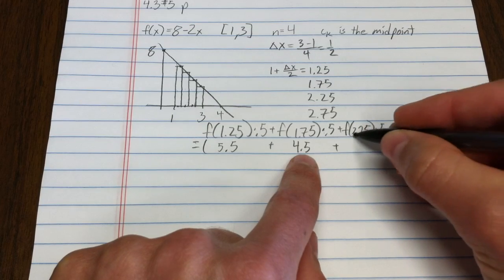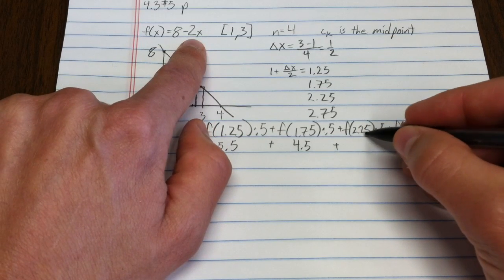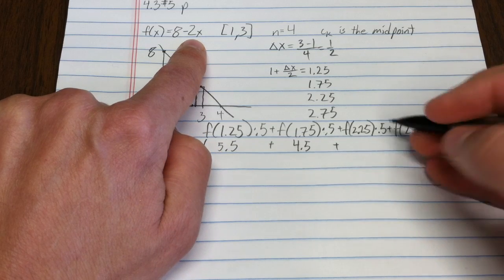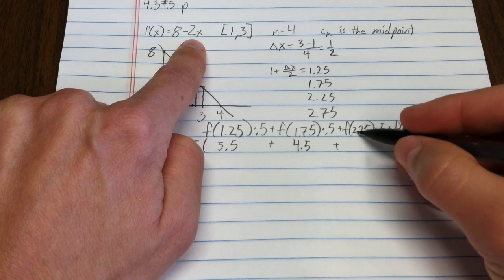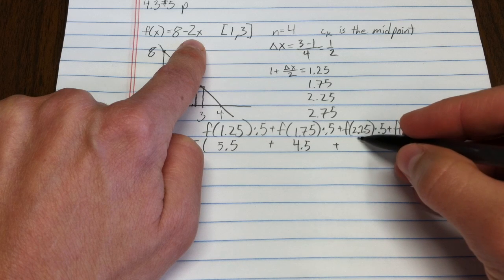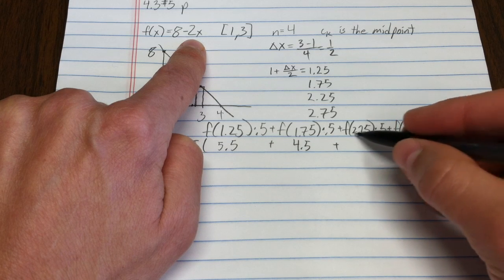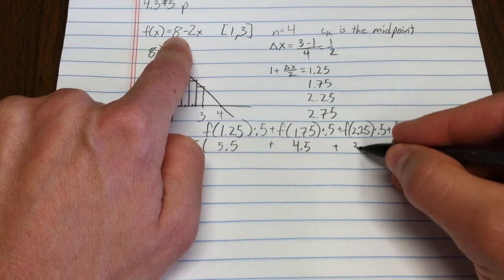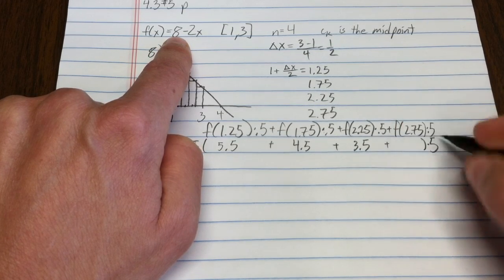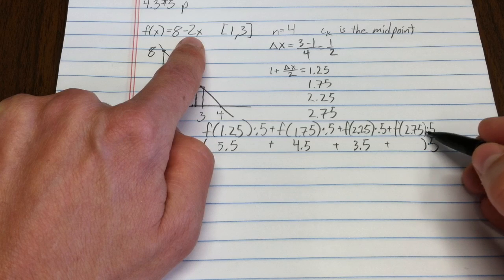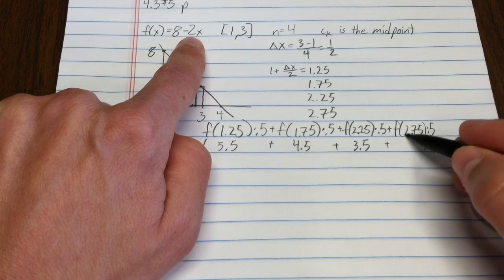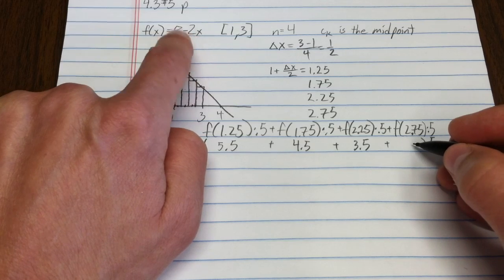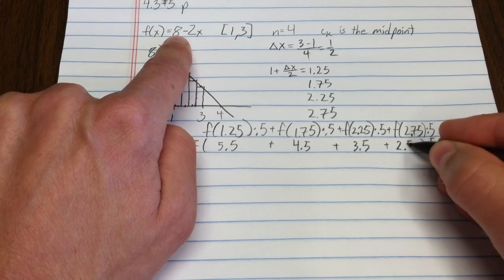2 times 2.25 is 4 and a half, and 4 and a half taken away from 8 is 3 and a half. And last but not least, 2.75, that's 5 and a half when it's multiplied by 2. So 5 and a half taken away from 8 is 2 and a half.